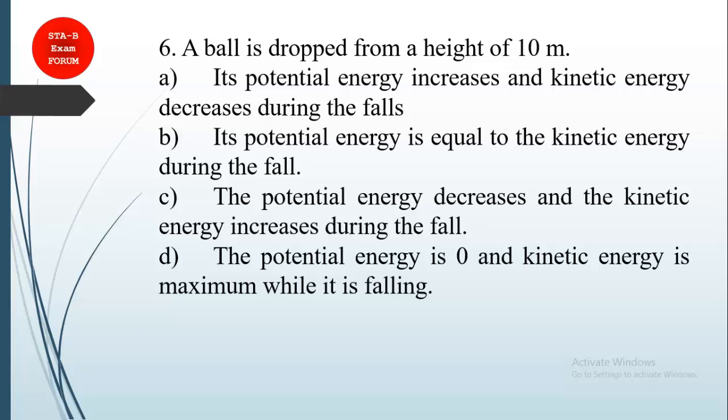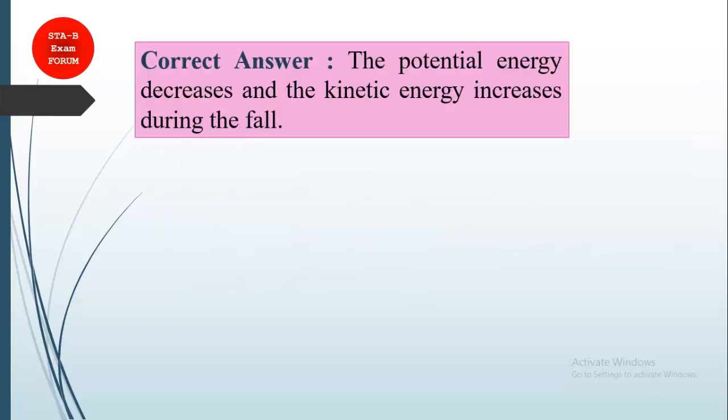Question number six, again this is from physics: a ball is dropped from a height of 10 meters. They have given something related to energies. Potential energy increases or kinetic energy decreases during fall, or both remain equal, or potential energy decreases and kinetic energy increases, or potential energy is zero and kinetic energy is maximum while falling. As you know, if we are dropping from a certain height, potential energy will try to decrease, and kinetic energy, because it is gaining velocity, increases. So potential energy decreases and kinetic energy increases during the fall.